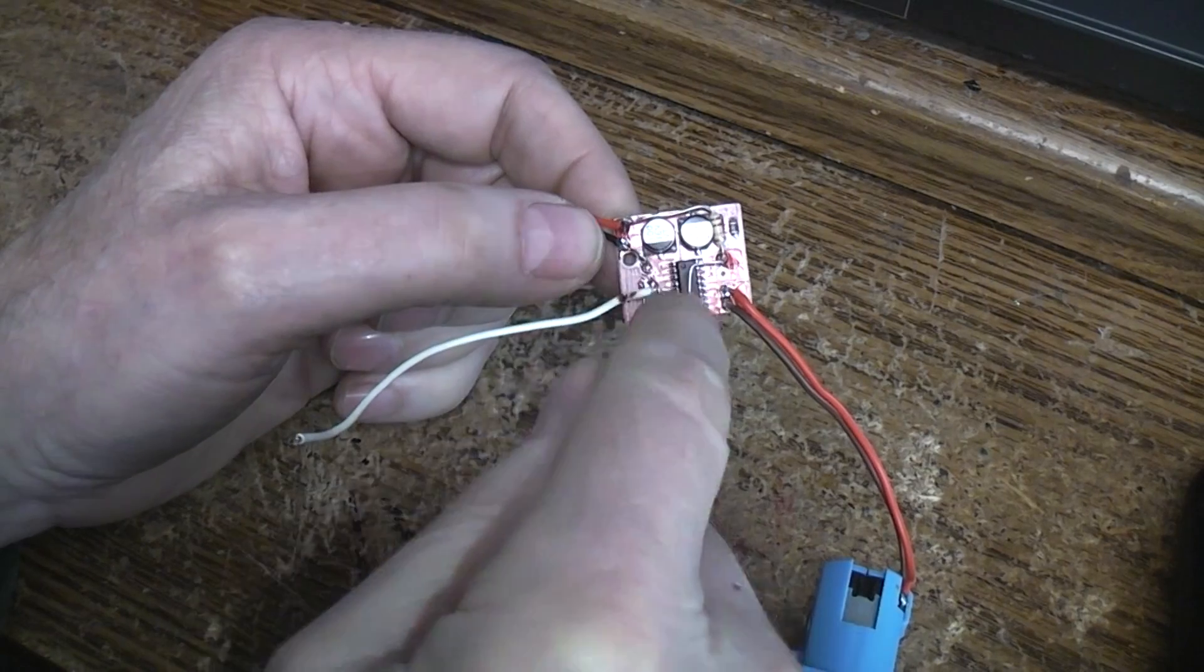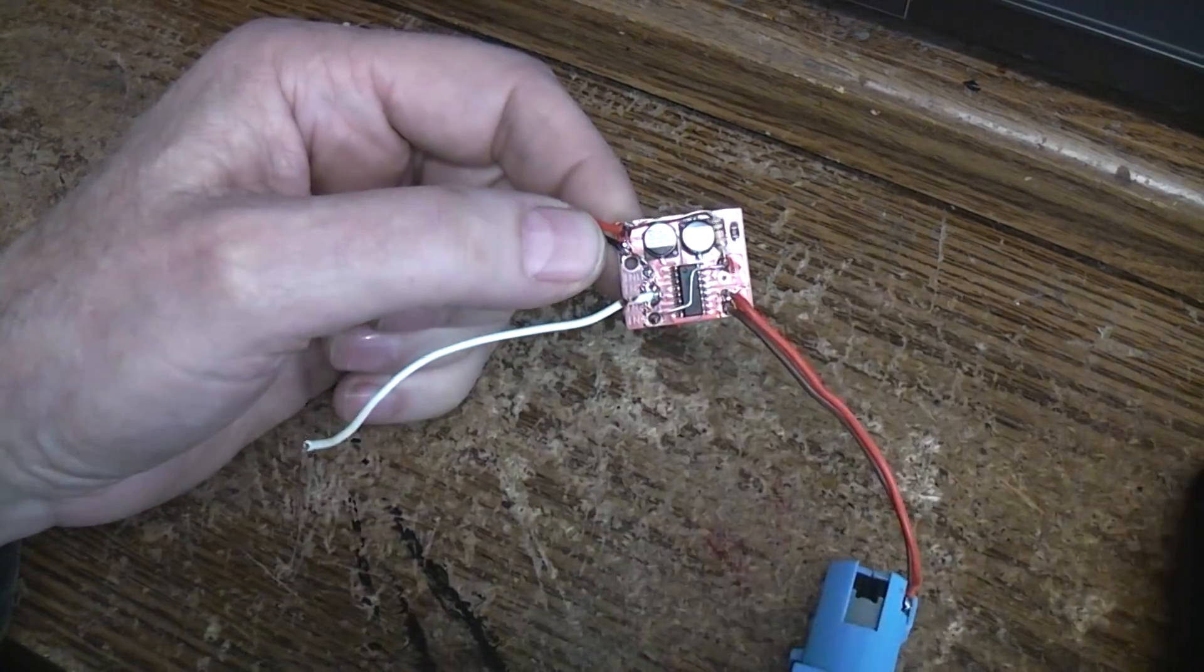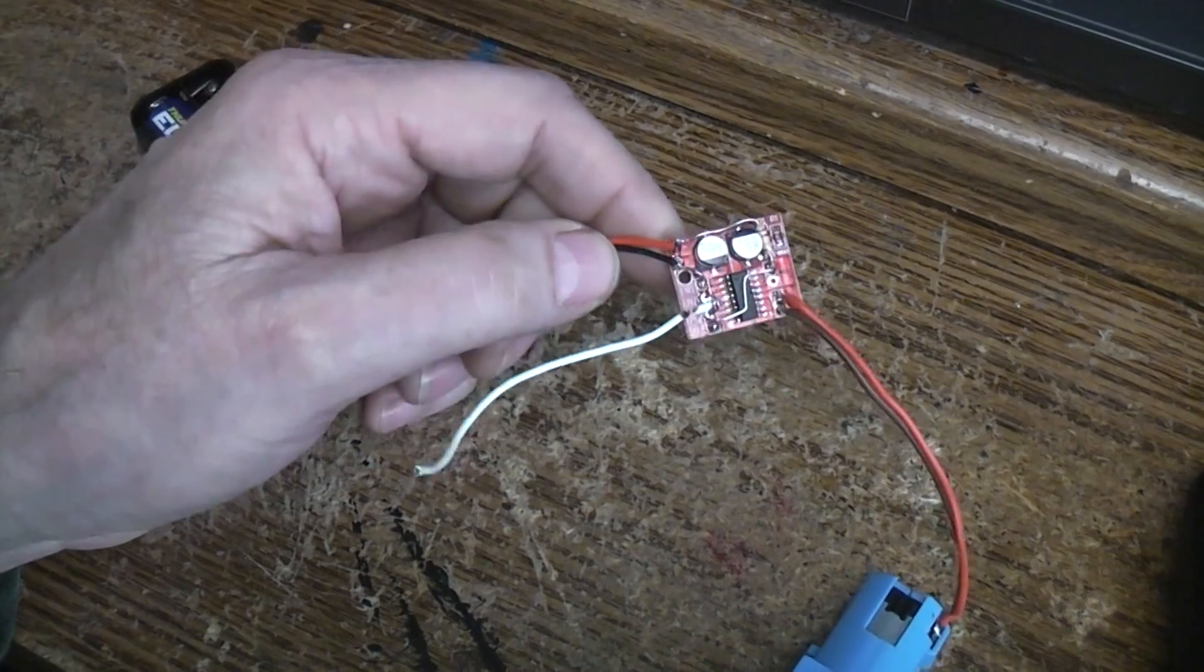In fact, I guess in order for this to consider nothing being connected to negative, it must have internal pull-down resistors. But there you go.